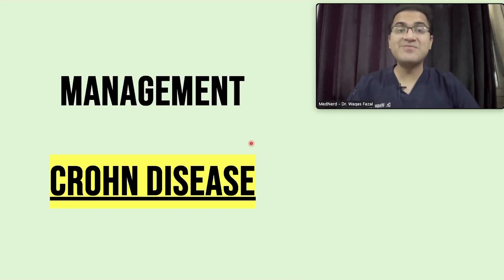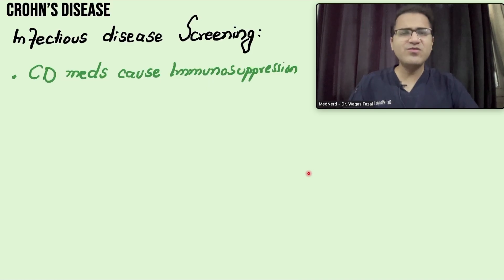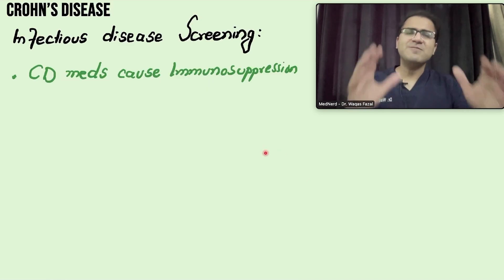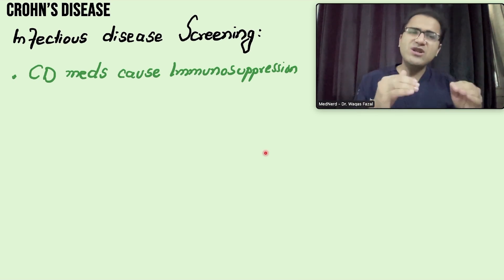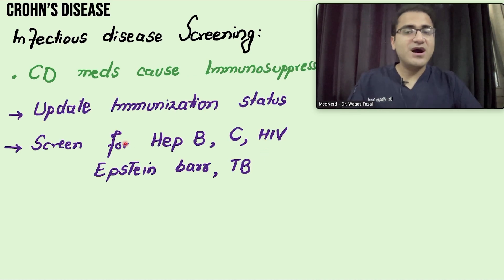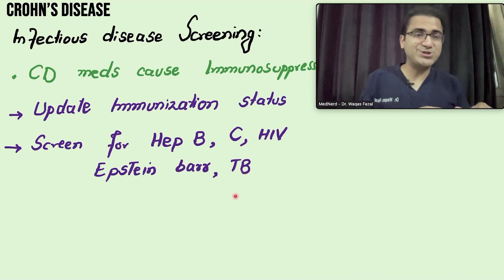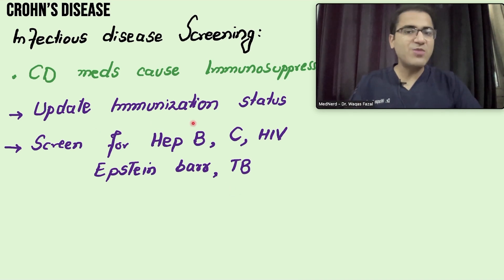Now coming to the treatment and management of Crohn's disease. In my previous video I talked about the pathogenesis, diagnosis and clinical symptoms of Crohn's disease. In this video we are going to talk about the treatment. Before you start treatment, remember the drugs used for maintenance therapy usually cause immunosuppression, so these patients should be screened for hepatitis B, C, HIV, Epstein-Barr virus, and tuberculosis, because if you immunosuppress these patients, occult infections like tuberculosis could reemerge. You should also update the patient's immunization status.